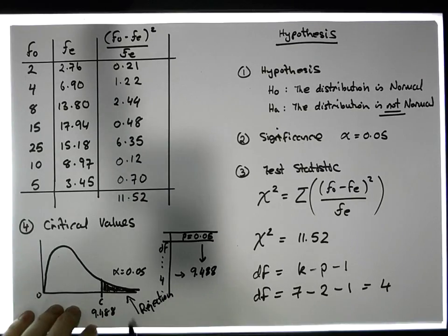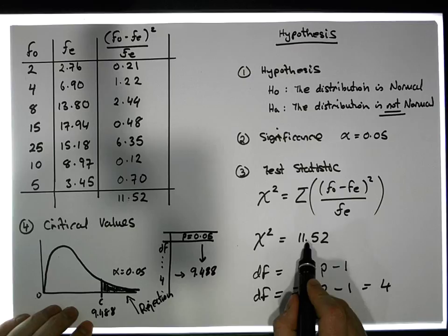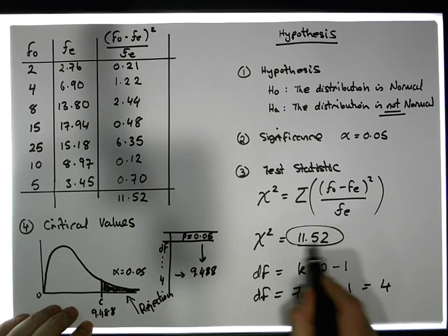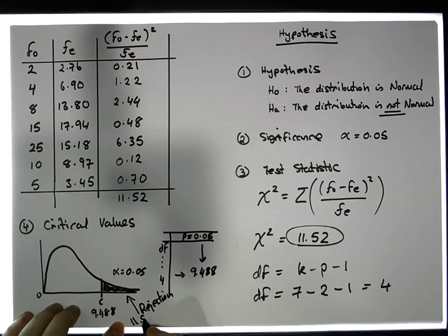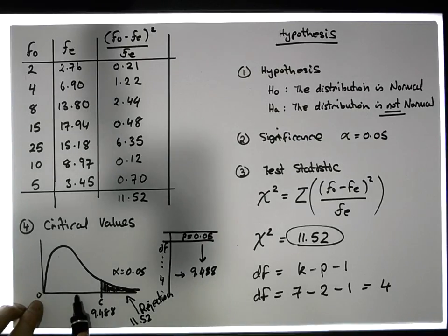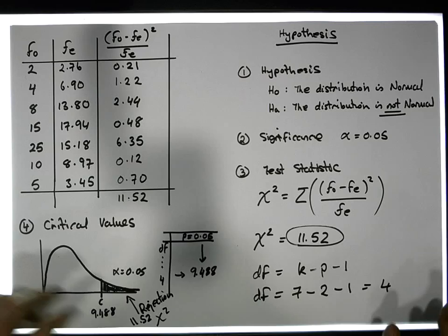Now our test statistic is 11.52. 11.52 is in there, it's 11.52 units away from zero, so that's actually where our chi-squared test statistic is—it's in the rejection region, so now we can make our decision.